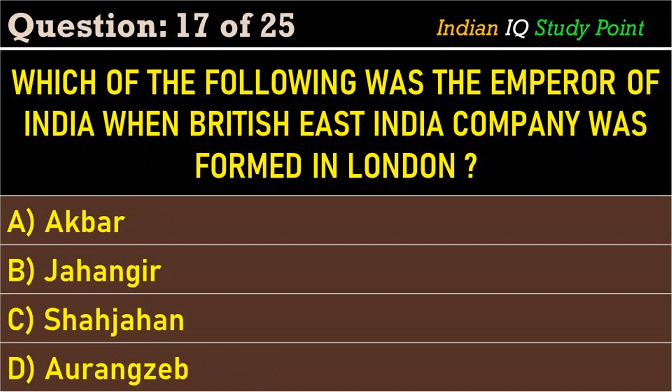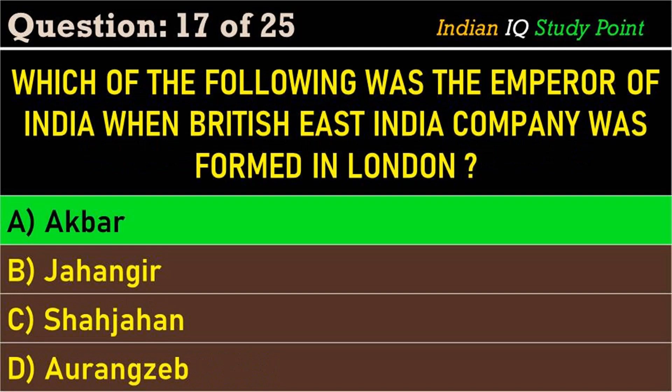Coming to the next question: which of the following was the emperor of India when the British East India Company was formed in London? Option A. Akbar, B. Jahangir, C. Shah Jahan, D. Aurangzeb. And the correct answer is Option A. Akbar.